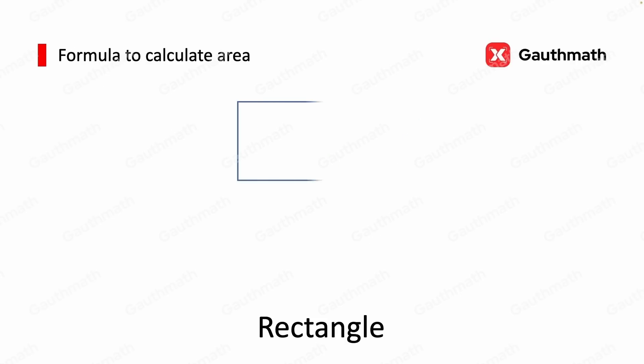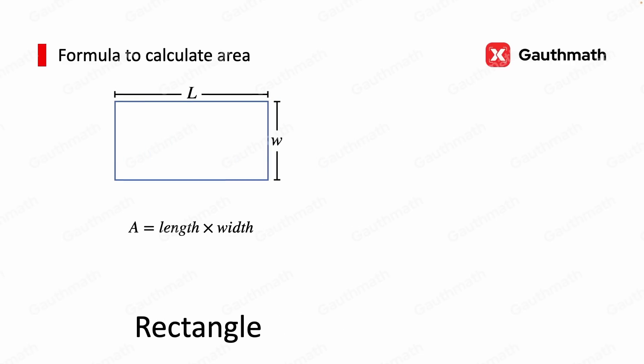First is rectangle. The area is obtained by multiplying the length by the width. And you can take the square as a special kind of rectangle, where the length and width are the same. Therefore, the area of the square equals A times A.